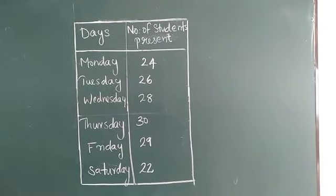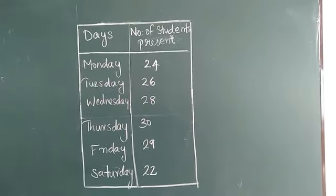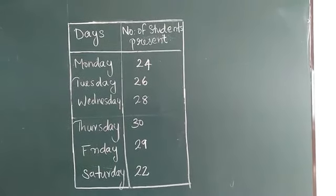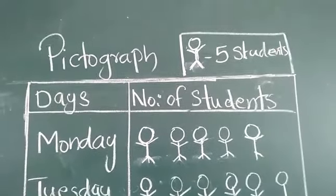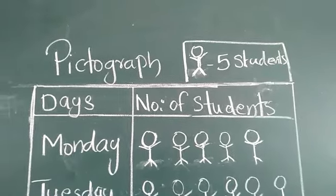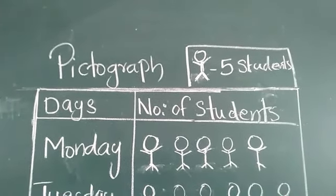We can draw pictograph. So first we have to decide how many students will resemble by one picture. From here we can see 24, 26 etc. So we can take one picture is equal to 5 students. That we should mention at the top of the pictograph. This is simple picture for 5 students.